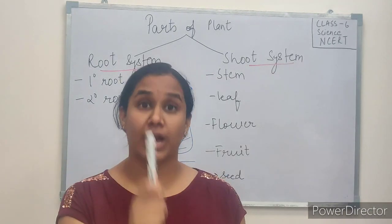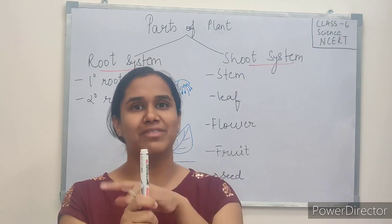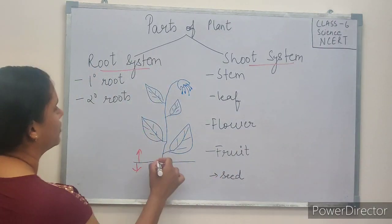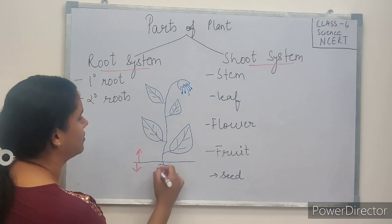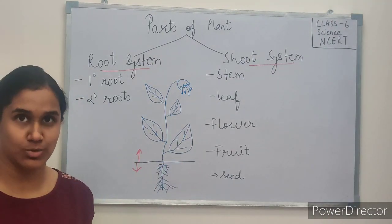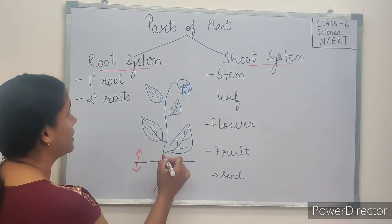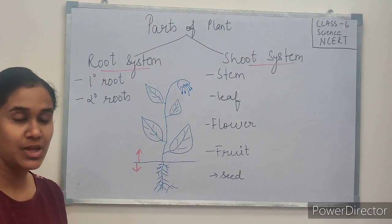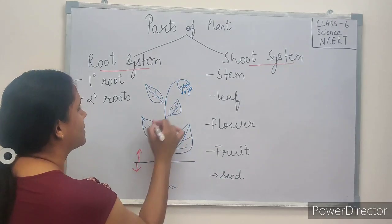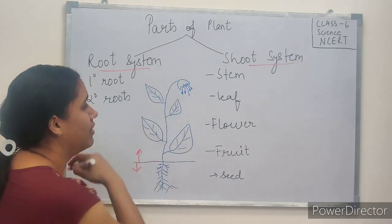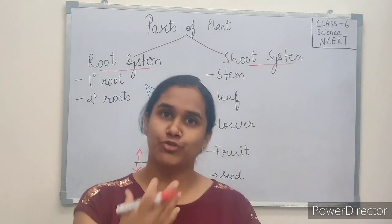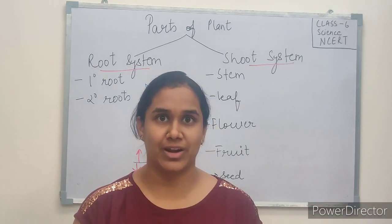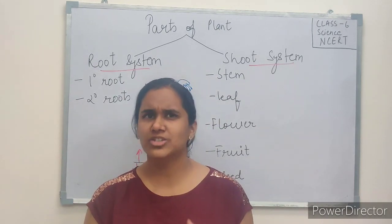In the root system, you have one primary root from which several secondary roots are coming out. Here you can see a primary root and various secondary roots coming out of it. In the shoot system, we have the stem, then we have the leaves, a flower which turns into a fruit, and inside the fruit we find the seeds.